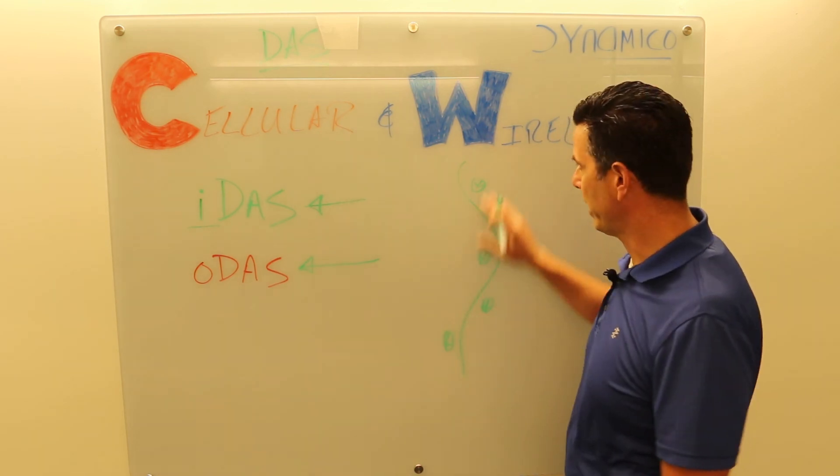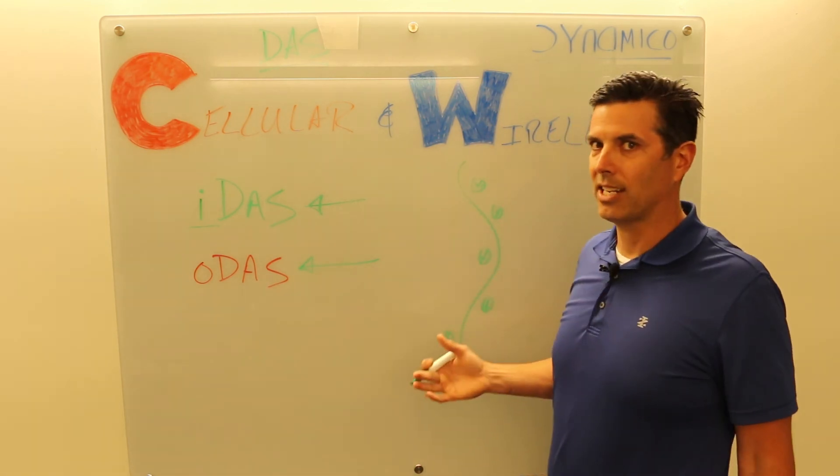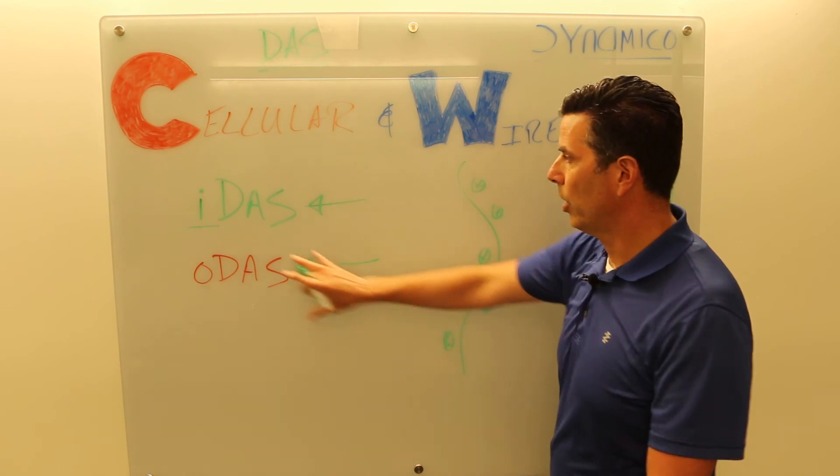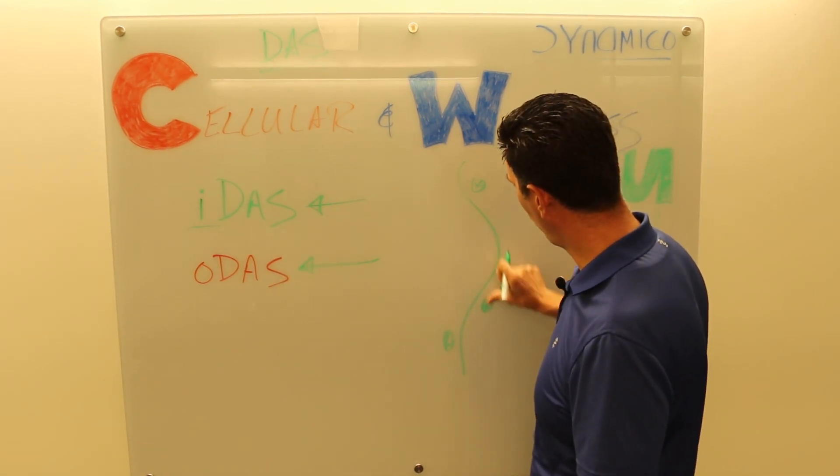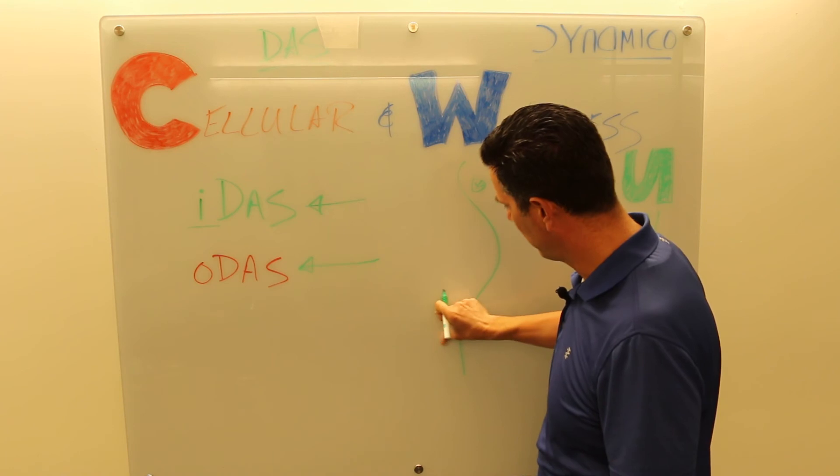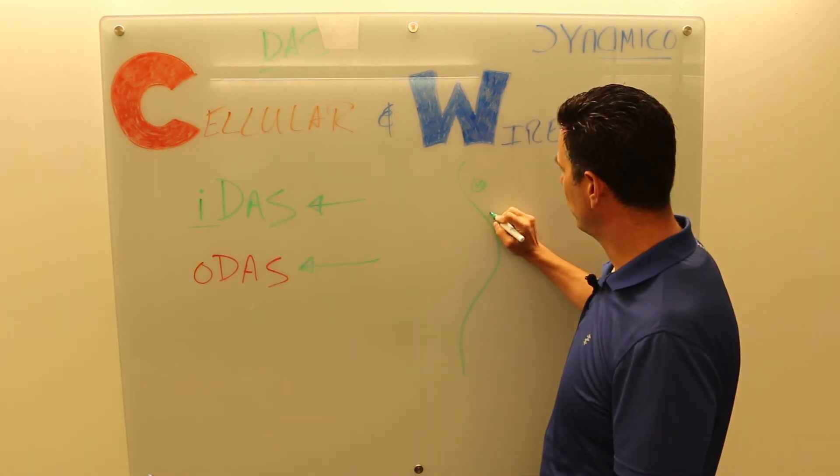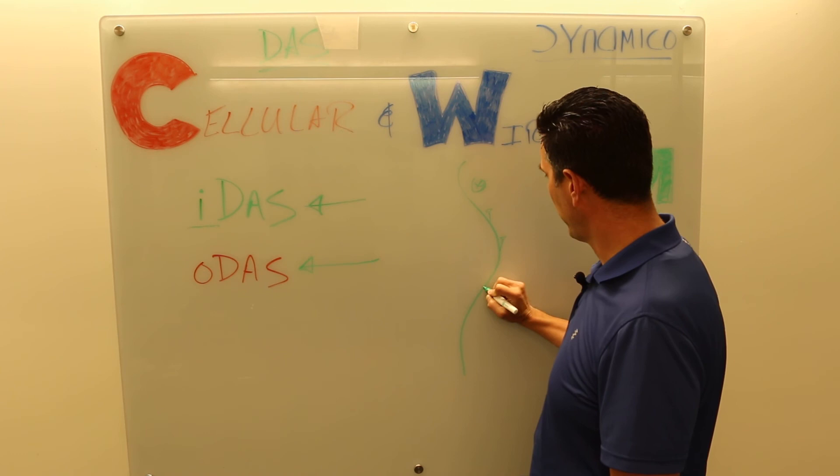So what ODAS, one of the reasons ODAS was born, is you could put in one macro site, then you could put DAS nodes along that road and you could cover that road with DAS nodes, ODAS nodes, outdoor DAS nodes, cheaper than if you built all different macro sites.